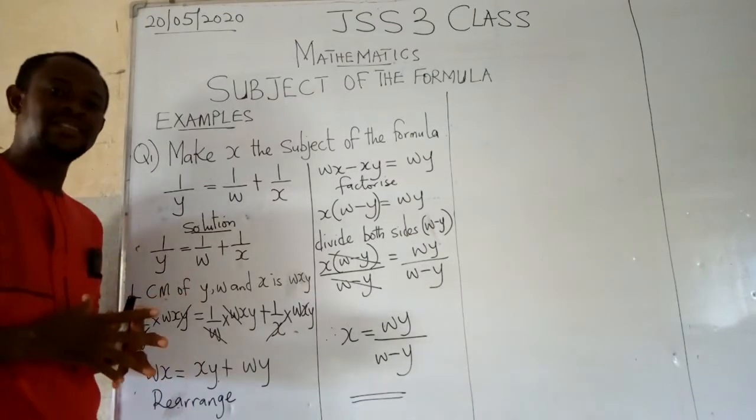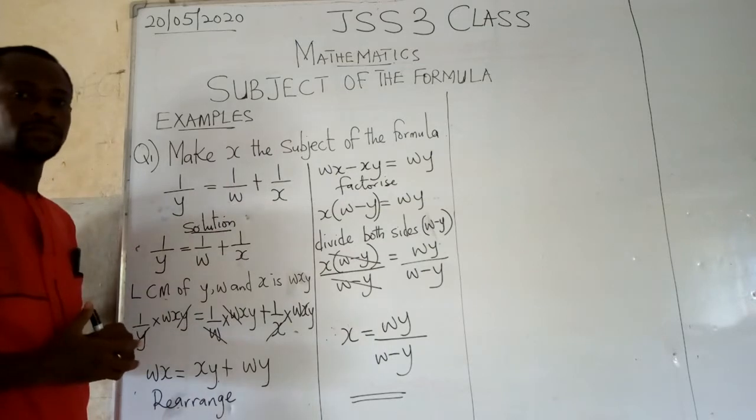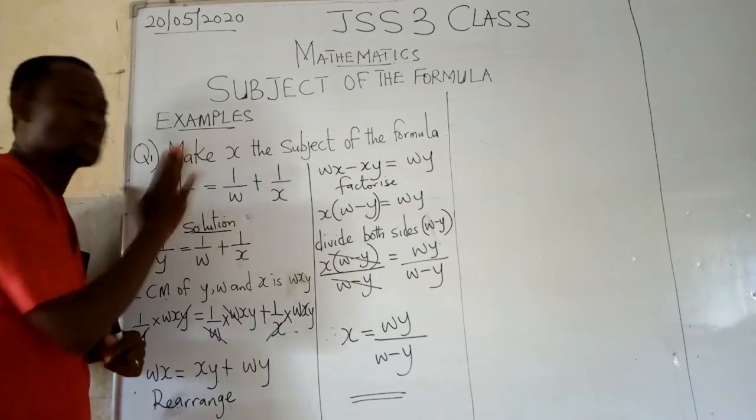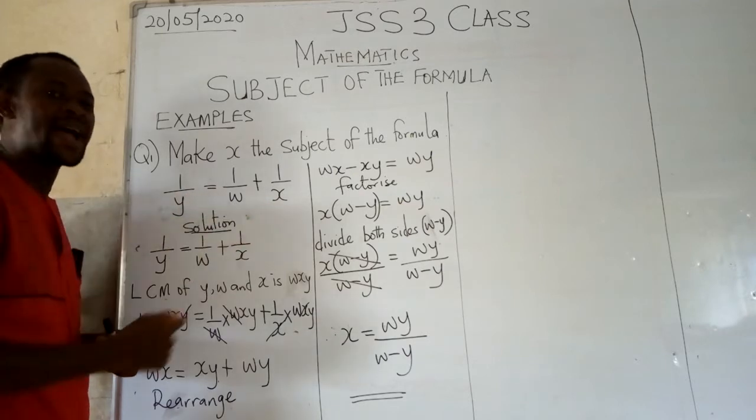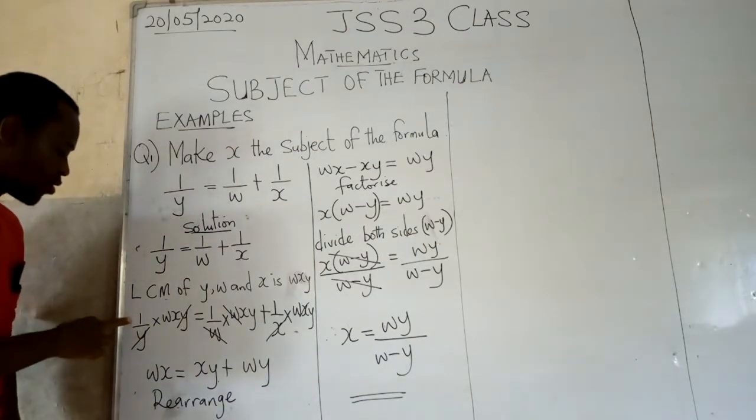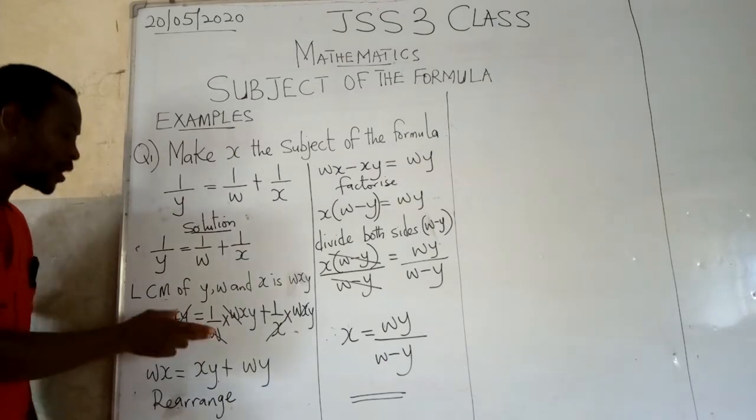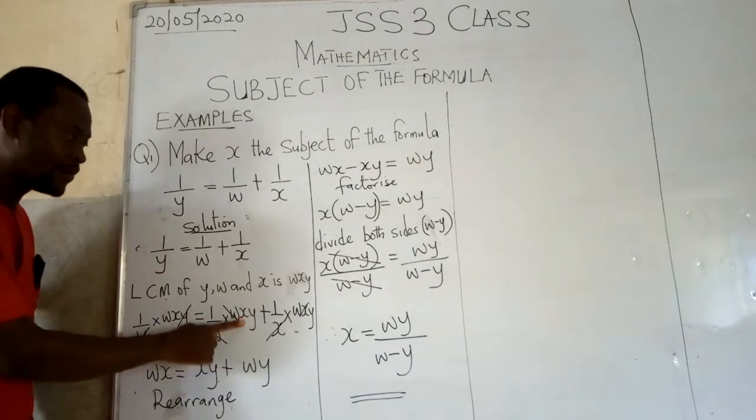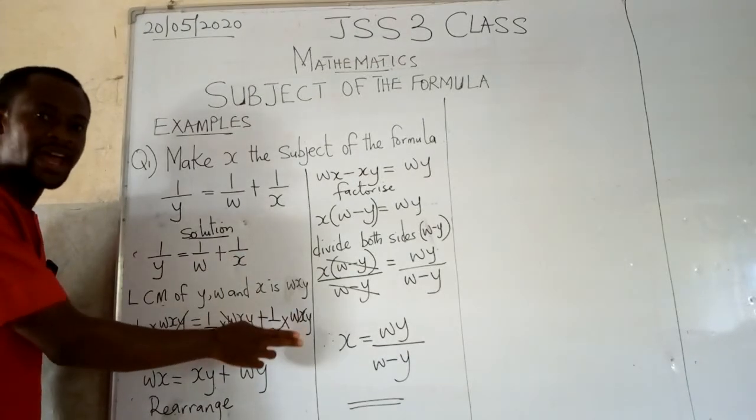Then if you have solved for your LCM, what do you do? Use that same LCM to multiply each of this fraction. Because you have got your LCM now as w x y, you will now use your LCM to divide each of this fraction. Why are you doing that? To be able to clear the fraction. So if we come to this area, 1 over y times LCM w x y equals 1 over w times w x y per LCM. The same thing applicable to 1 over x times w x y.